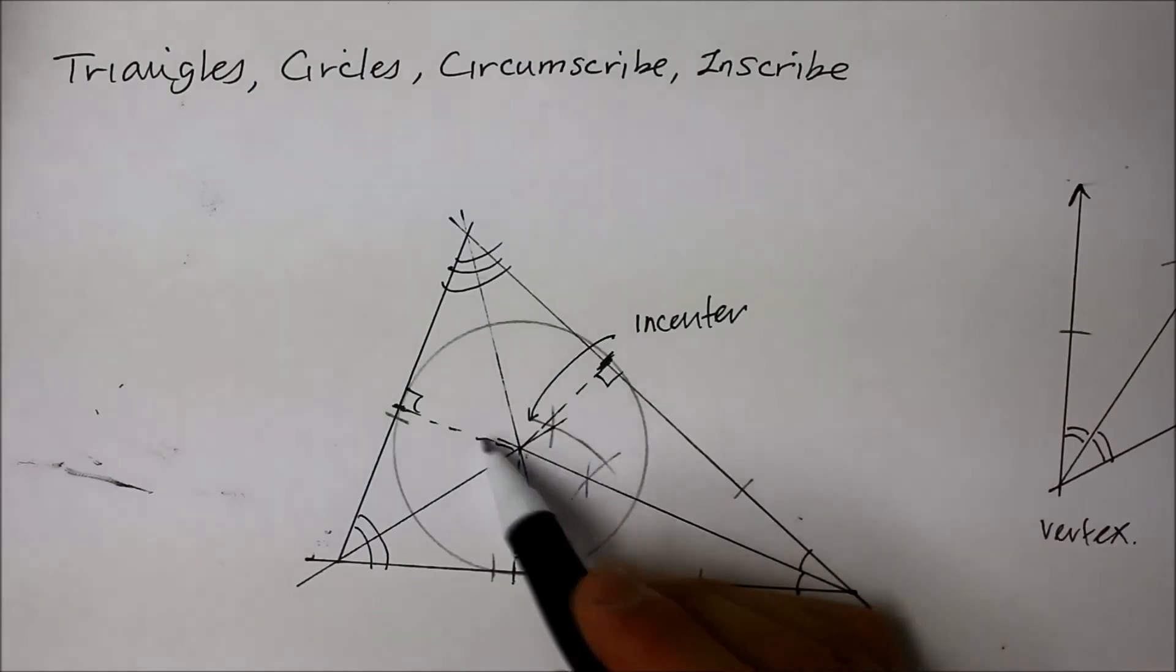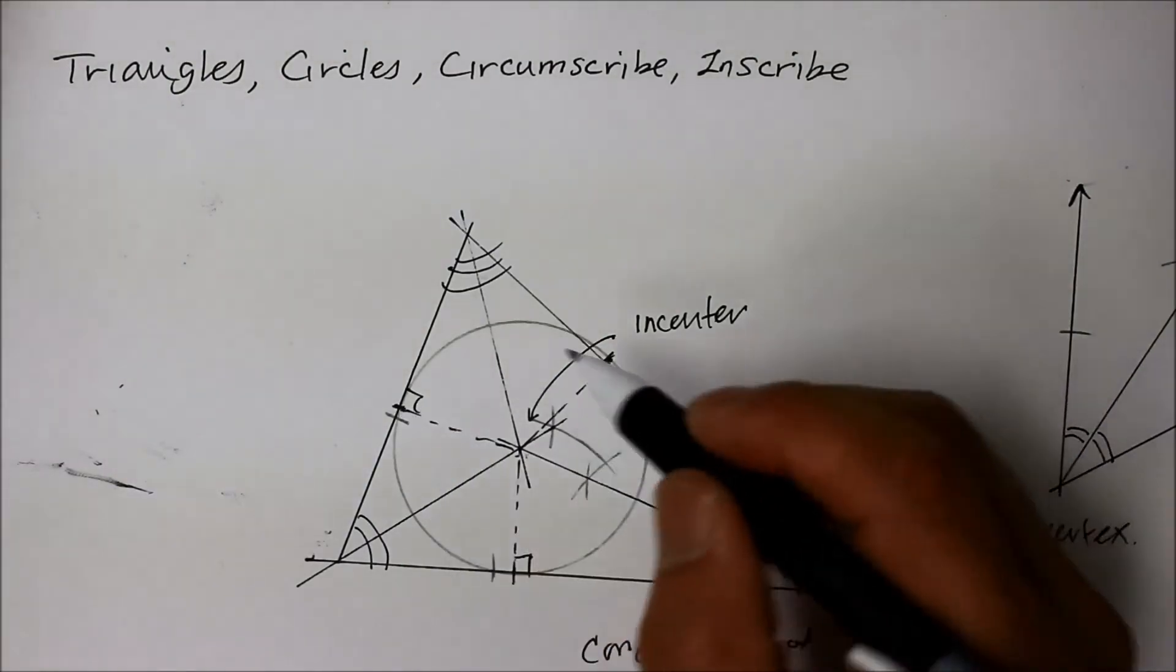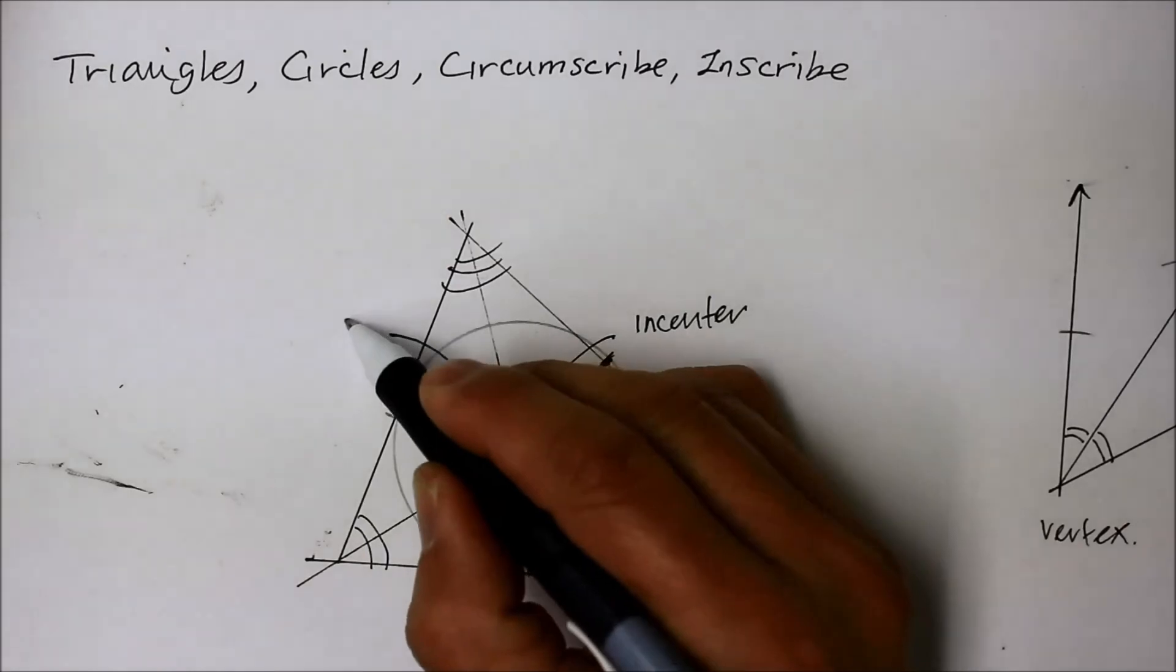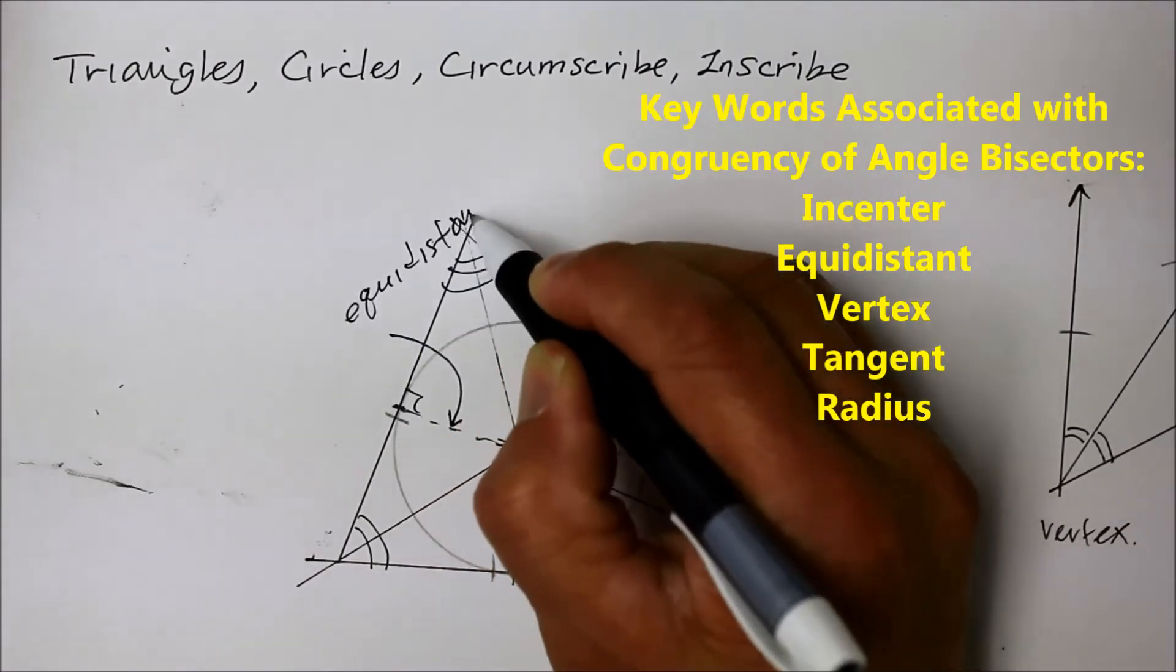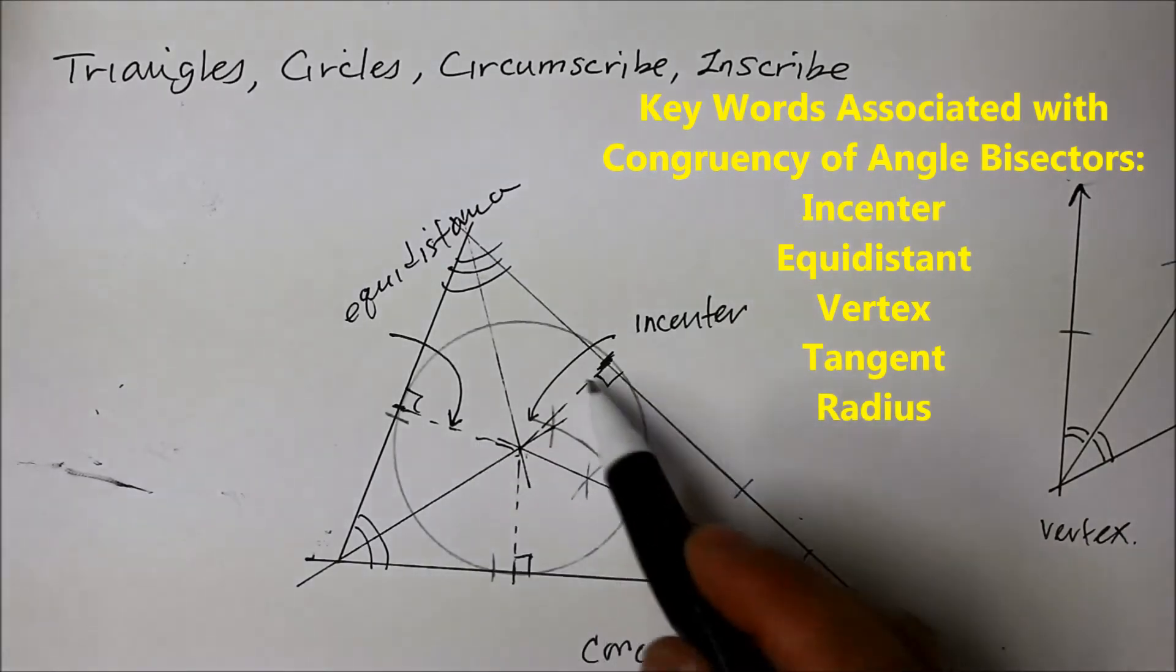And that distance from the center to the point of tangent is actually equal distance. Equal distance to each other.